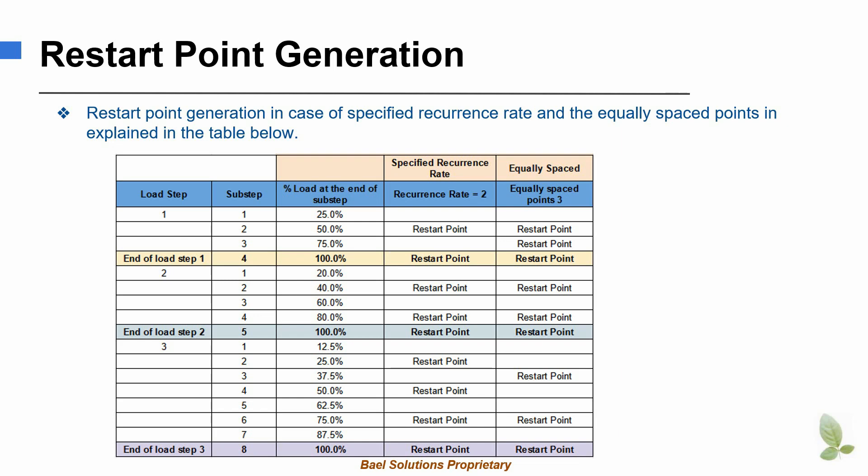In the first case, a specified recurrence rate of 2 has been specified. In the second case, three equally spaced points are specified. In the first case, the restart points are written after every alternate sub-step. In simple words, a restart point is written at every second sub-step as the recurrence rate is 2.